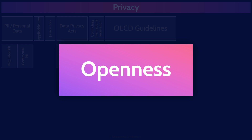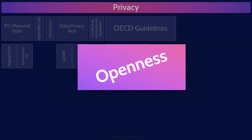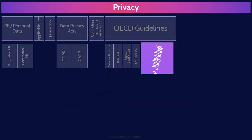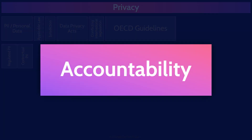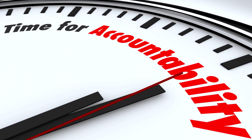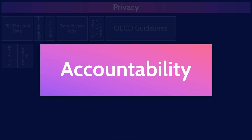The openness principle relates to an organization's culture — there should be a general policy of openness about developments, practices, and policies with respect to PII. An organization should not hide or be secretive about what they're collecting and using PII for. The individual participation principle means a data subject should have the right to obtain their data from the controller and have their data removed. Under GDPR, this is often referred to as the right to be forgotten. The last principle, accountability, means a data controller should be accountable for complying with these principles — there must be an owner, a data controller, with clear accountability for the protection of PII.